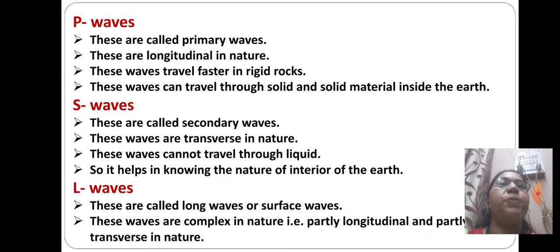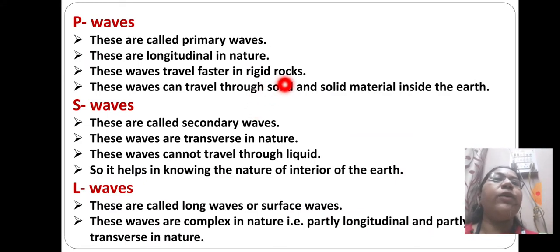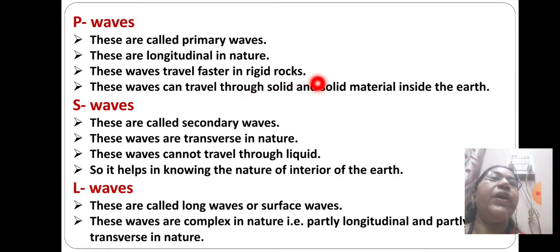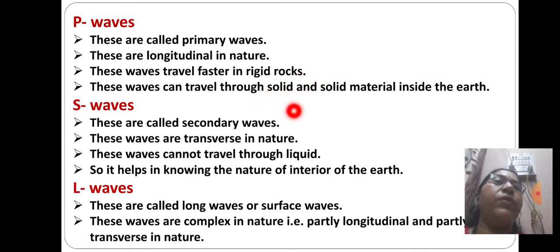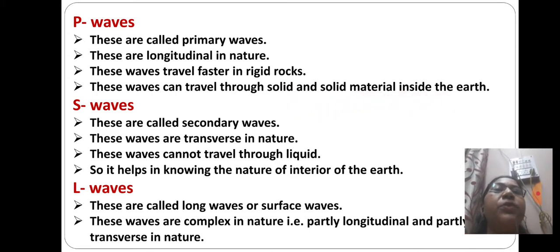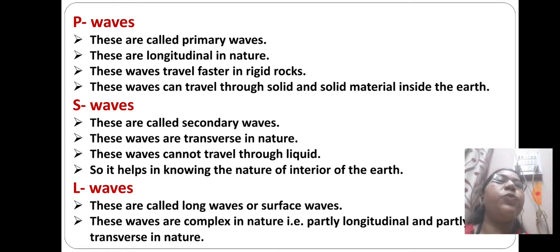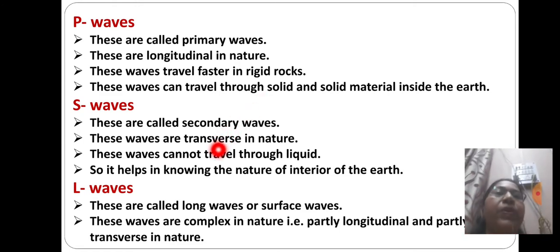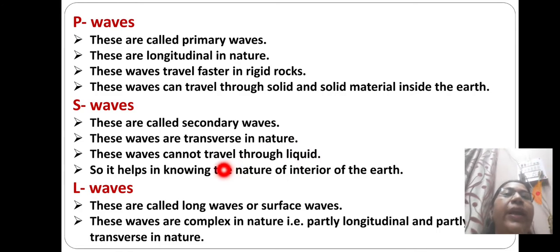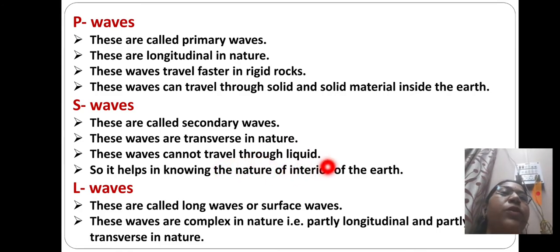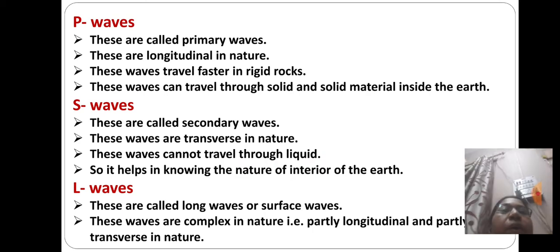P waves are called primary waves. These are longitudinal in nature and travel faster in rigid rocks. These waves can travel through solid material inside the earth. S waves are called secondary waves. These are transverse in nature and cannot travel through liquid, which helps in knowing the nature of the interior of the earth.